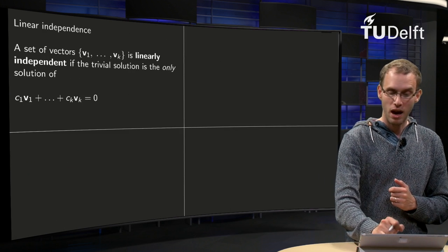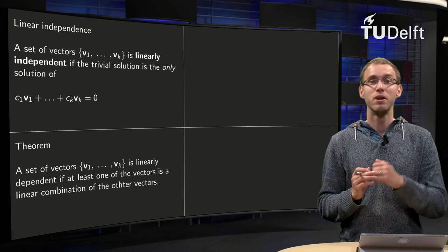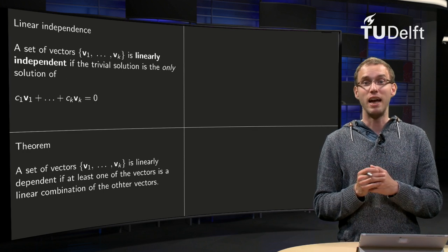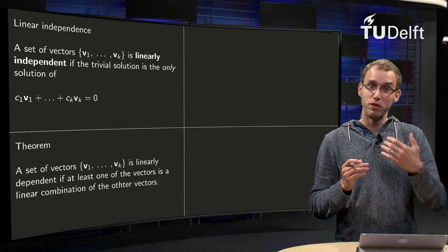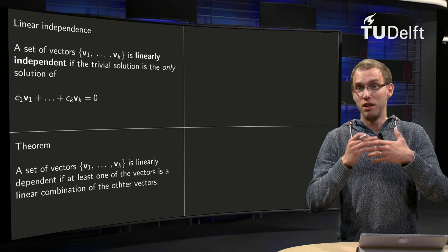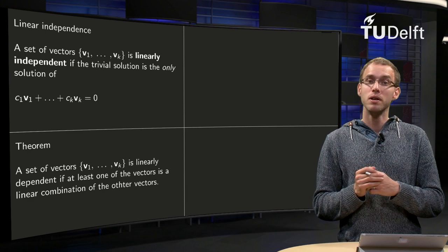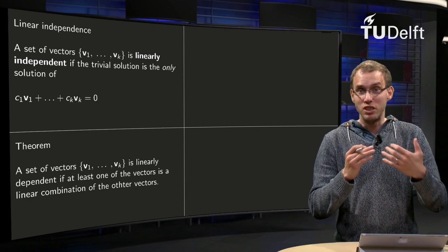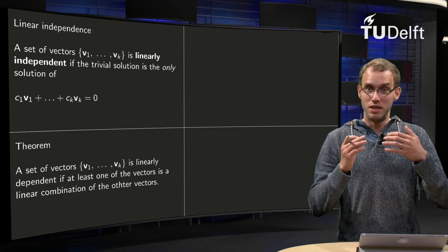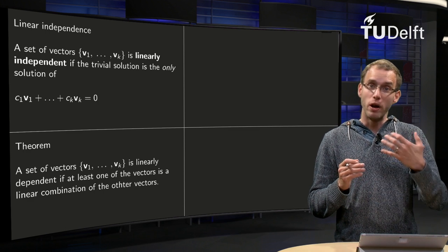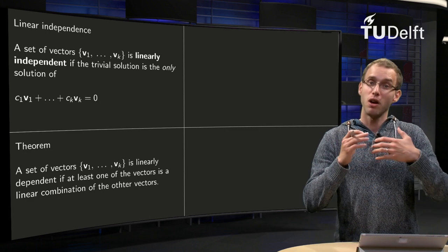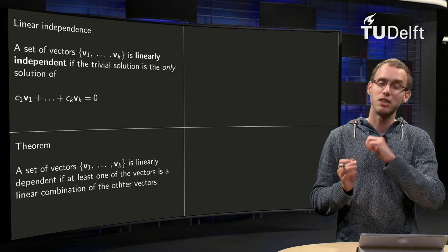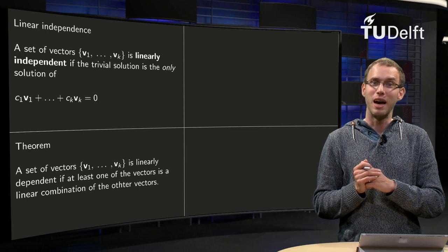We also have a similar theorem. A set of vectors in Rn is dependent if one of its members is a linear combination of the other members. And that is what we can use in a few examples.